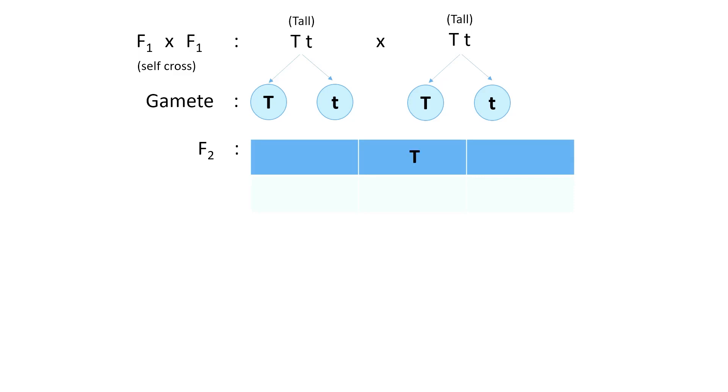Place the alleles from one parent on the top row of the table, and place the alleles from another parent down the leftmost column of the table, then combine the alleles. Just remember to always put the capital letter at the front.